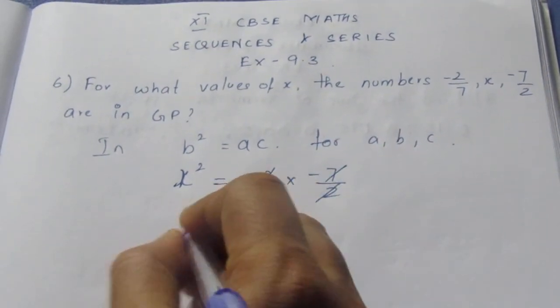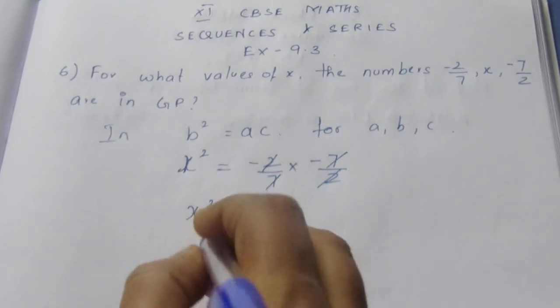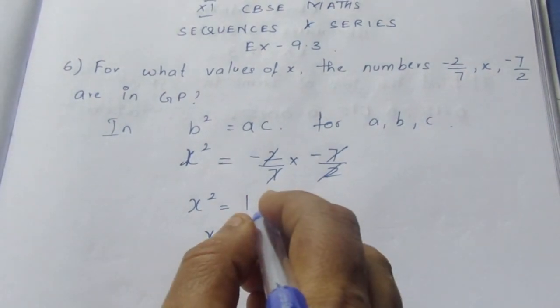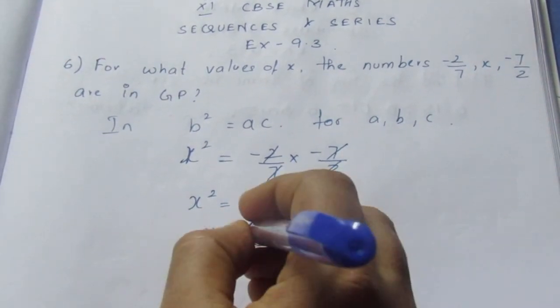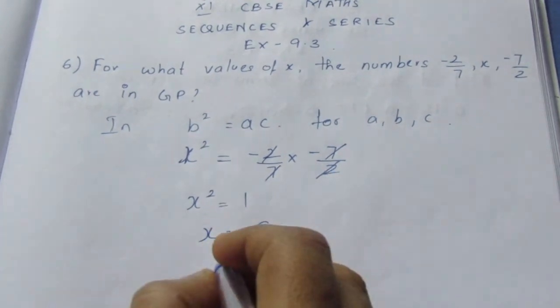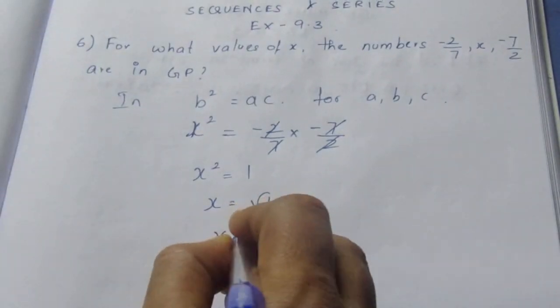Now minus into minus will become plus 1. So x² = 1, x = √1. We can write √1 to be plus or minus 1.